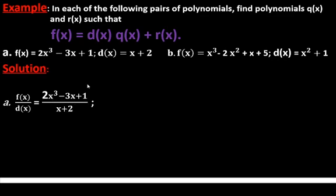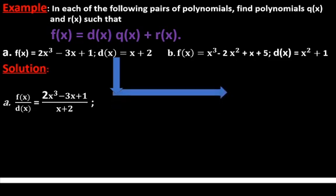To find the quotient and remainder, we divide the degree three polynomial by the linear polynomial x+2. We can apply long division or synthetic division, but synthetic division is the easiest way. Let me write down the coefficients of the given polynomial function. The coefficient of the degree three term is 2; there is no degree two term so its coefficient is 0; then -3 is the coefficient of the degree one term; and 1 is the constant term.